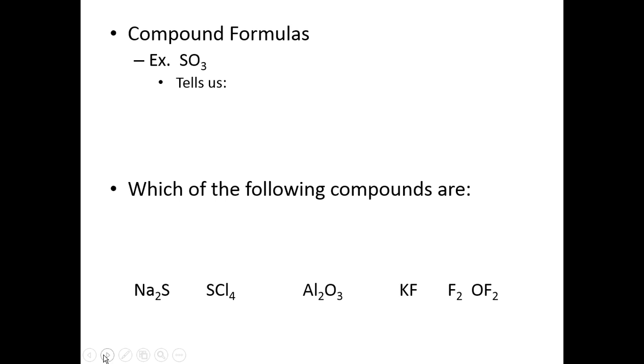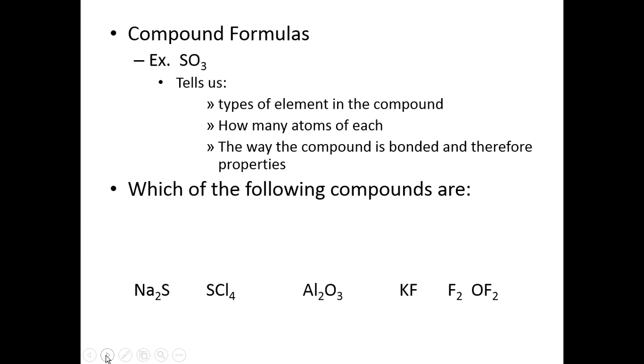So again, a compound formula tells us a couple of things. It tells us what elements are in the compound. In this case, sulfur and oxygen. It tells us how many atoms of each. In this case, one atom of sulfur, three atoms of oxygen. And it tells us the way the compound is bonded, i.e. is it covalent or ionic? Because sulfur is a non-metal, we know this sulfur trioxide is covalently bonded, and because it's covalently bonded, it tells us about the aforementioned properties.